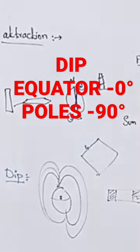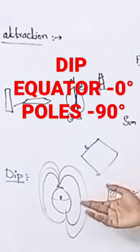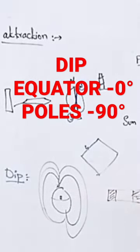If it is dip, consider it in a considerable range — that is equal to 0 degrees at the horizontal and 90 degrees at the pole.